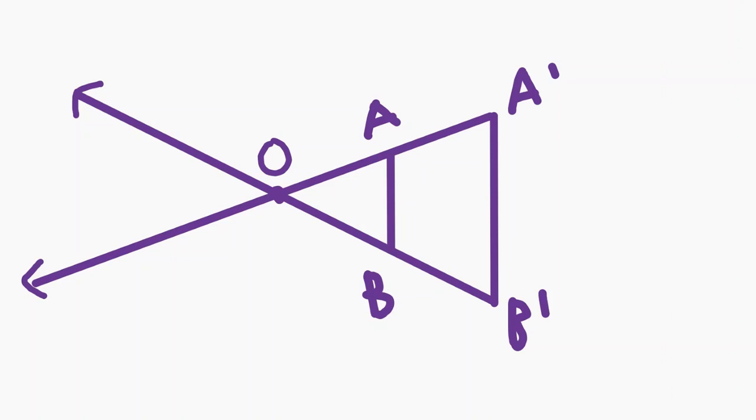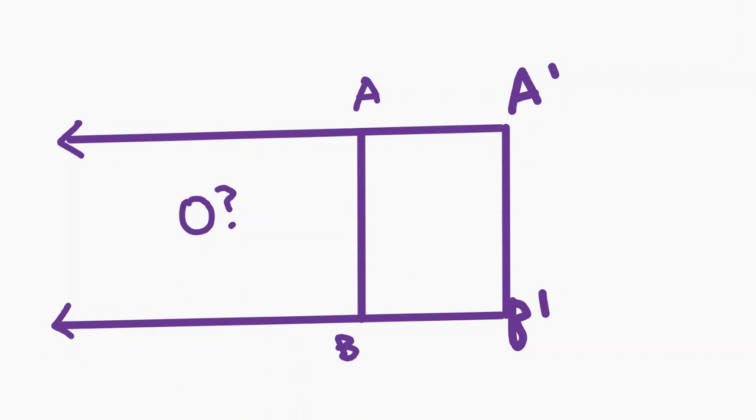Additionally, we can find O simply by finding the intersection of AA prime and BB prime. However, notice that when these segments are congruent, O does not exist. But we can still find a homothety.